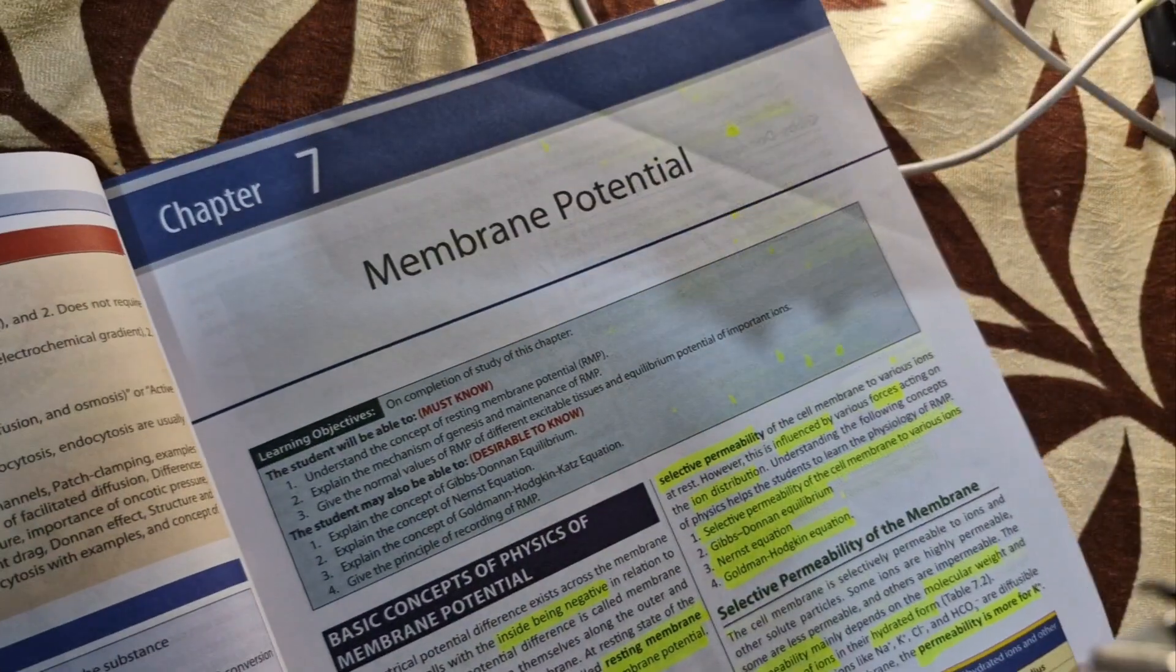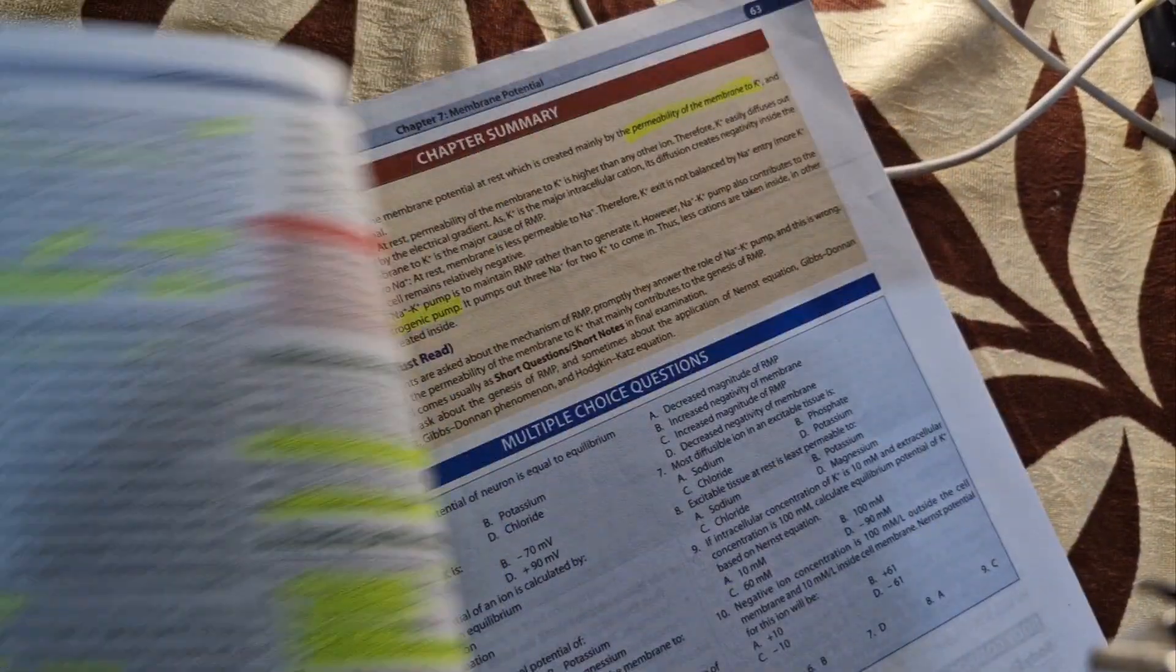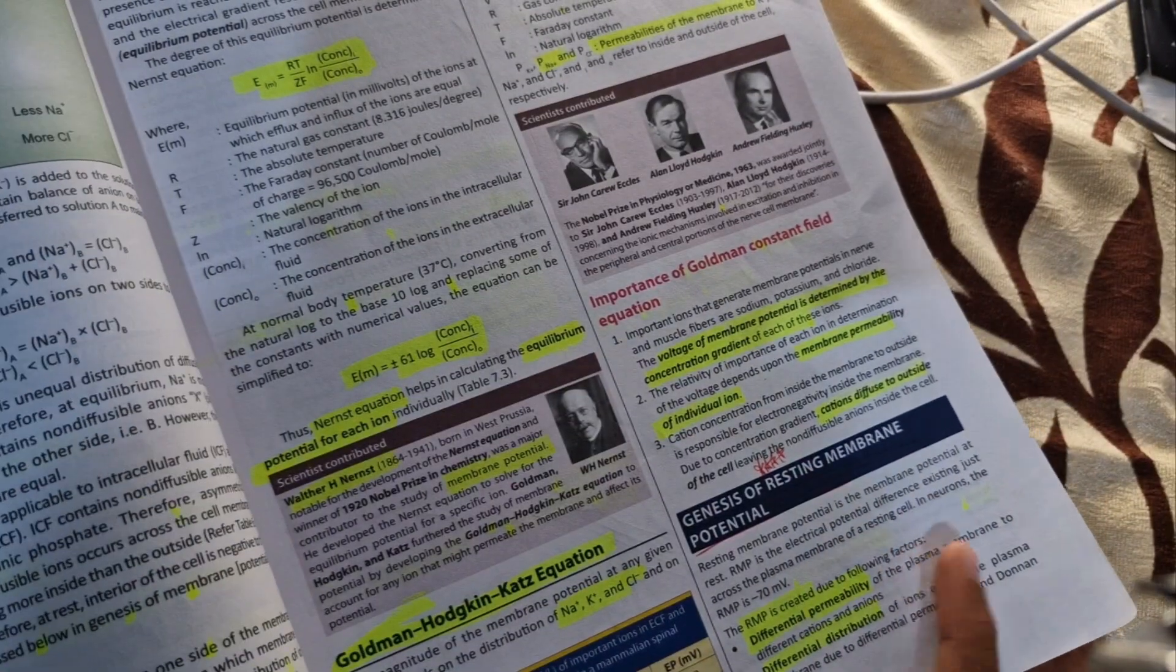That's all from chapter 6. Coming from chapter 7, membrane potential. There are no RS questions from this chapter. No, no, no - the genesis of the resting membrane potential is there for 5 mark question.